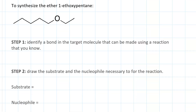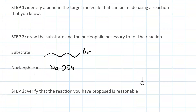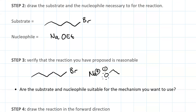The substrate we could use would be one-bromopentane. The nucleophile we would use would be sodium ethoxide. Let's check our mechanism: here is the ethoxide performing nucleophilic attack on the alpha carbon of the alkyl halide, which exceeds its octet, and thus we get loss of a leaving group as well. And there we have our product.